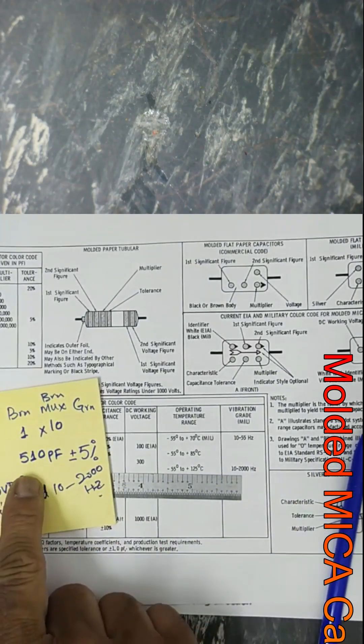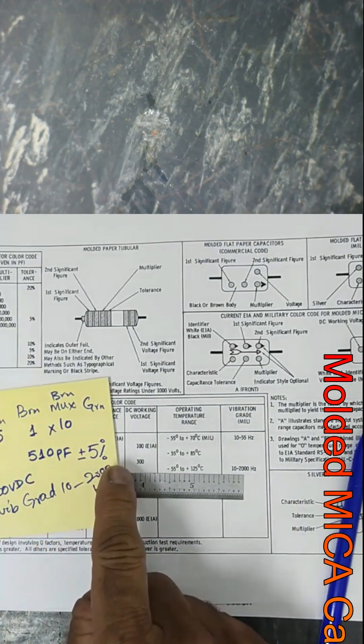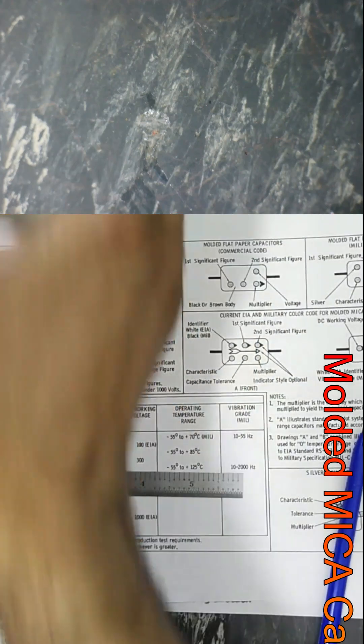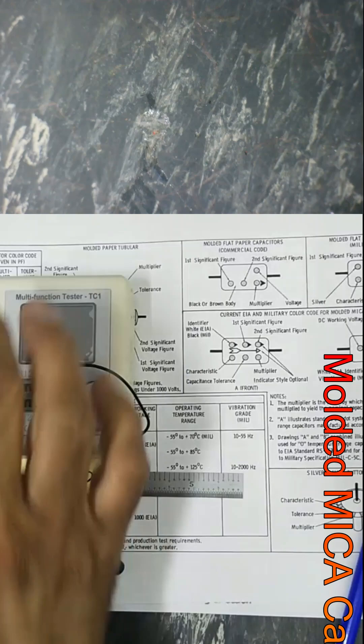So its value is 510 picofarad, plus or minus five percent, 500 volts DC. It is a molded mica capacitor.